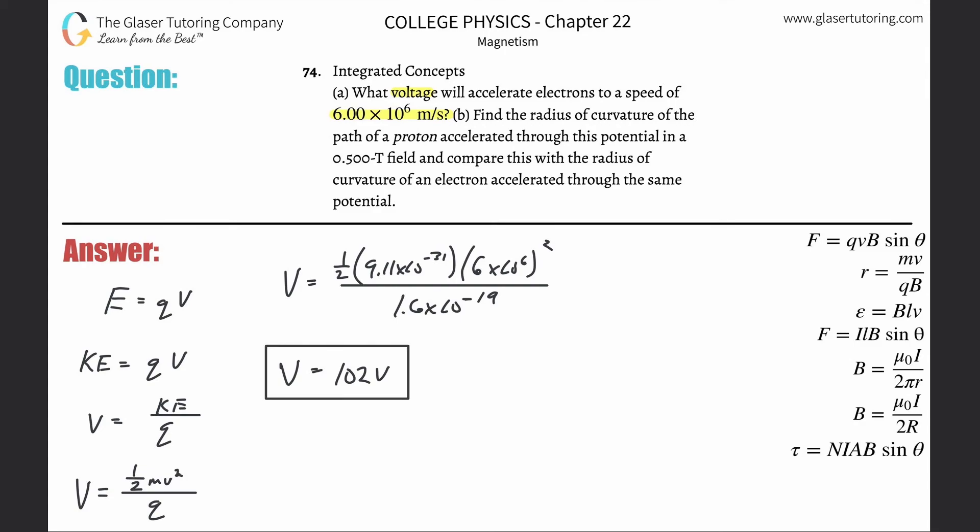And letter B now says find the radius of curvature of the path of a proton accelerated through this potential in a 0.5 Tesla field, and compare that with the radius of curvature of an electron accelerated. So we need a formula that deals with radius of curvature - that's over here on the right-hand side.